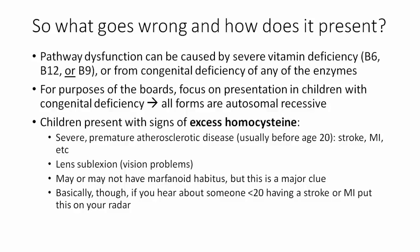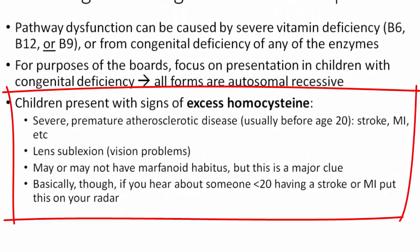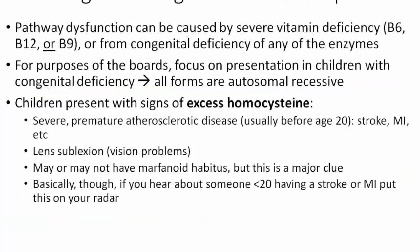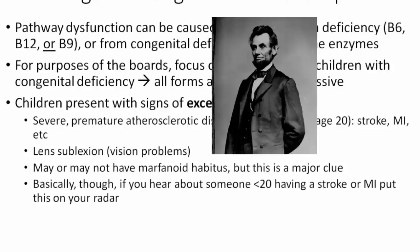How is a child with a loss of one of these enzymes going to present? We'll see signs of severe premature atherosclerotic disease, usually before age 20, which is usually going to be a stroke or a heart attack. You'll see lens issues presenting as lens subluxation, usually described as vision problems. These patients may or may not be described as having a marfanoid habitus — think Abraham Lincoln — tall, slender, with elongated digits or maybe a kyphotic spine.